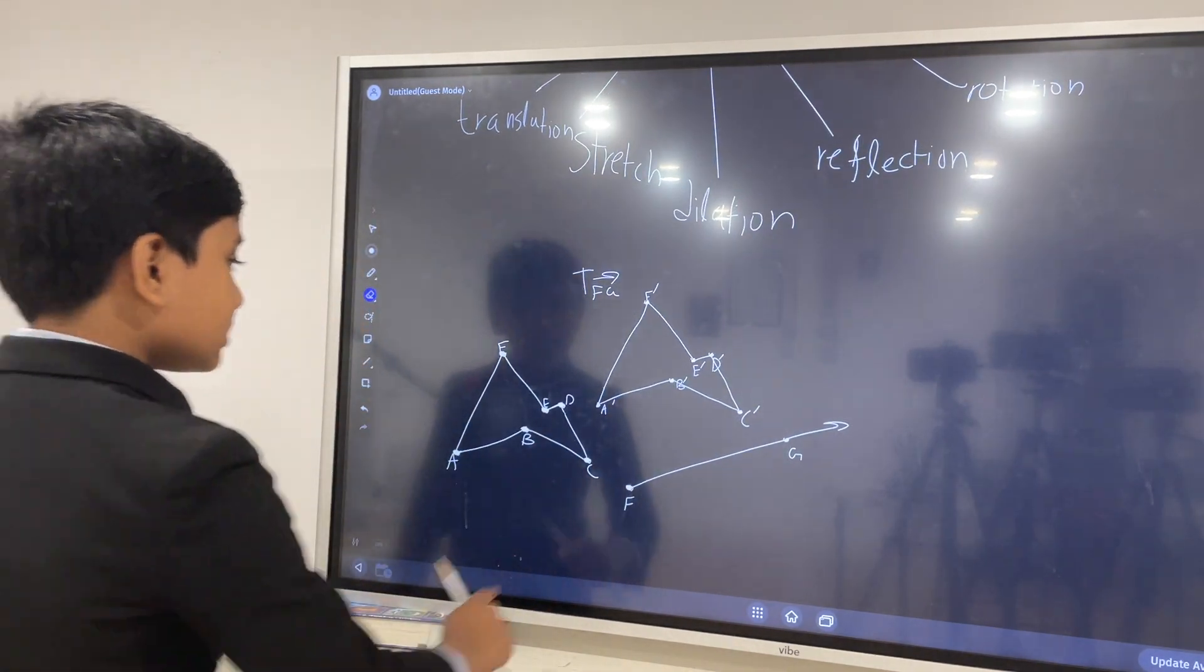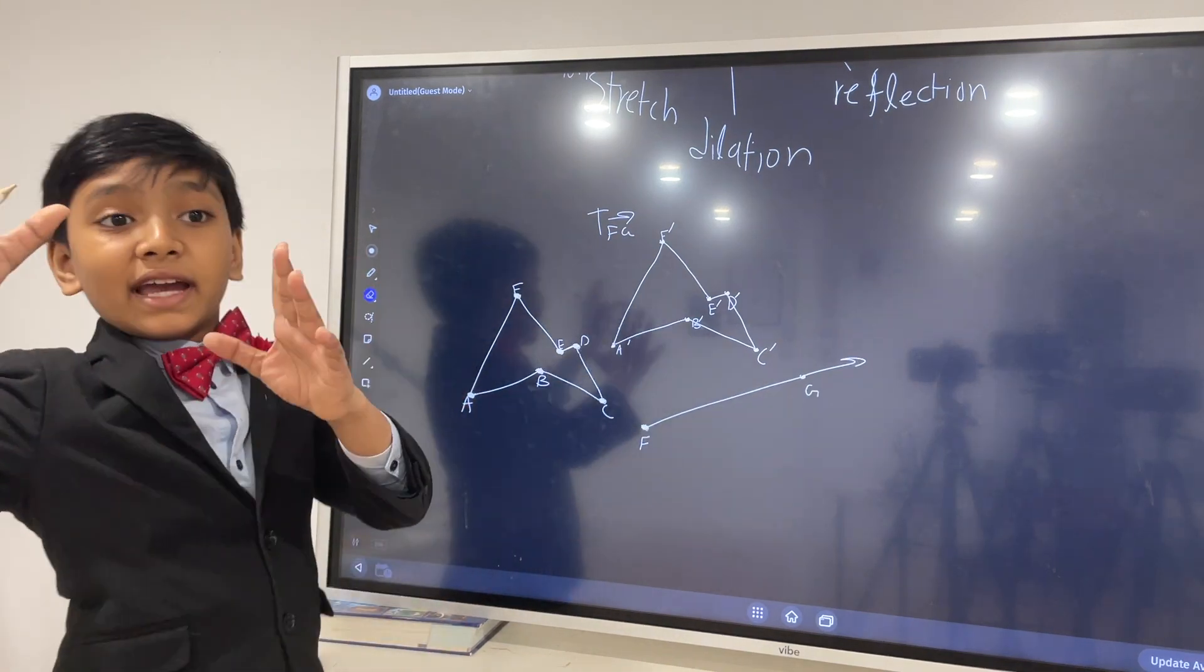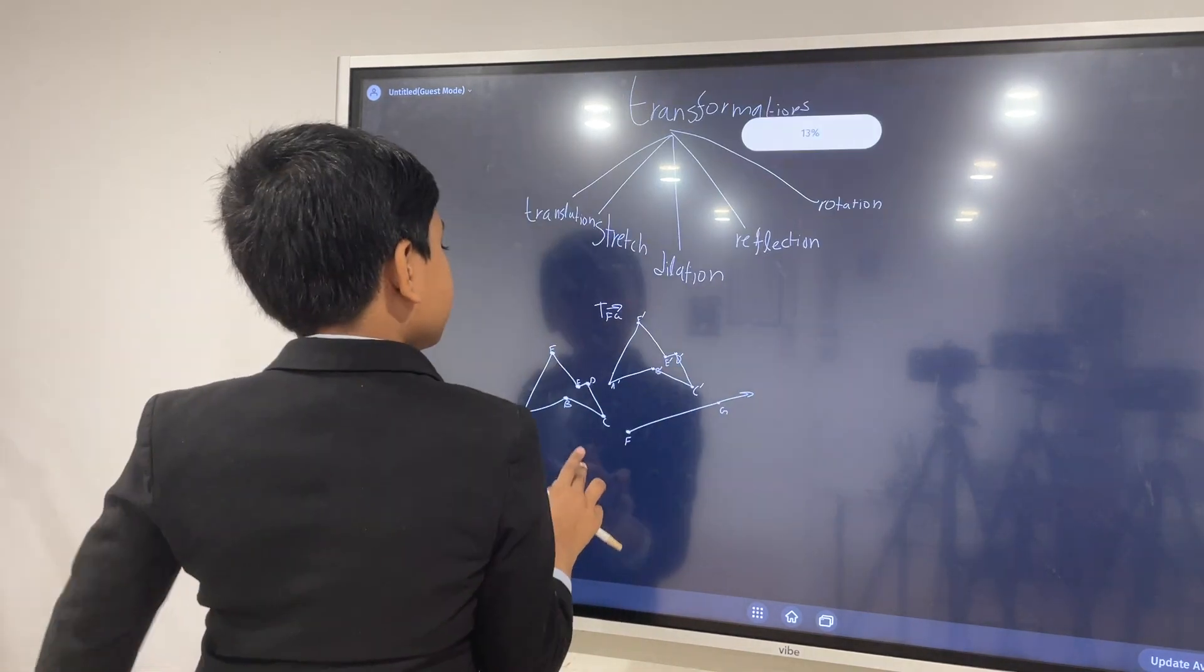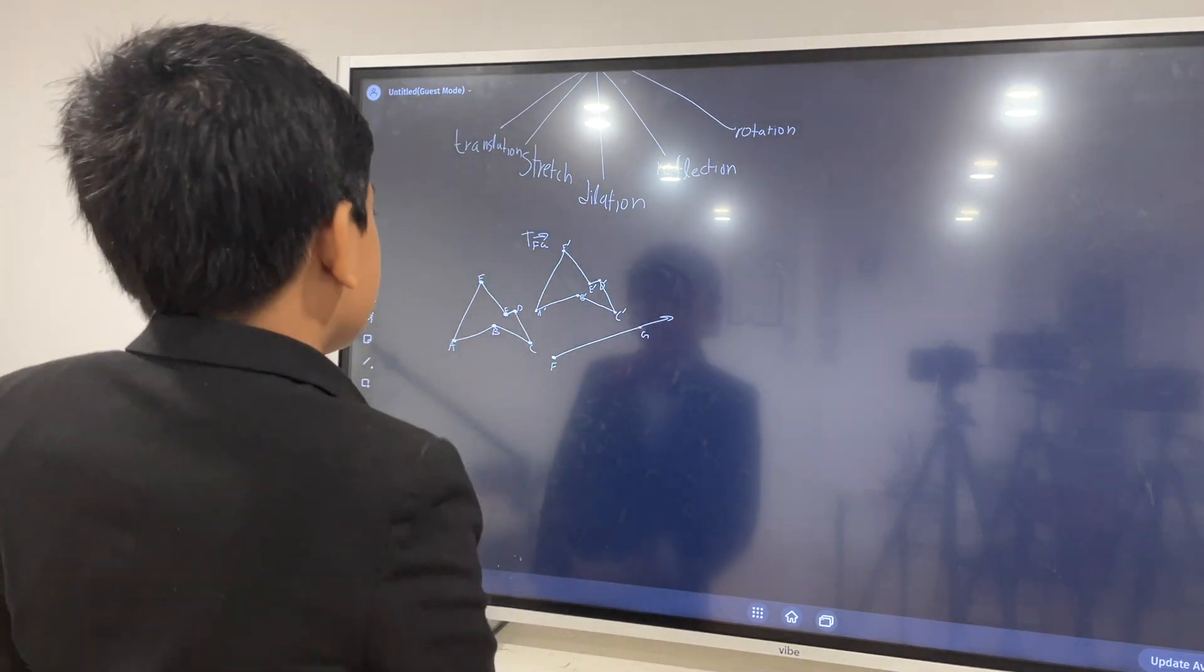So that's what translation is. Essentially, taking a shape and moving it. Now this is also useful in algebra, but we're covering that in our algebra series.